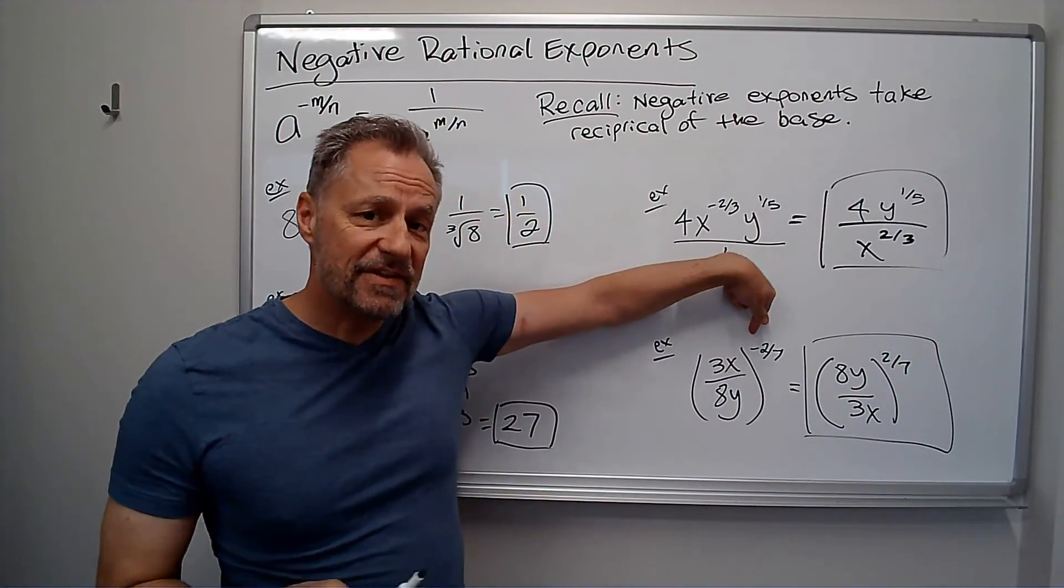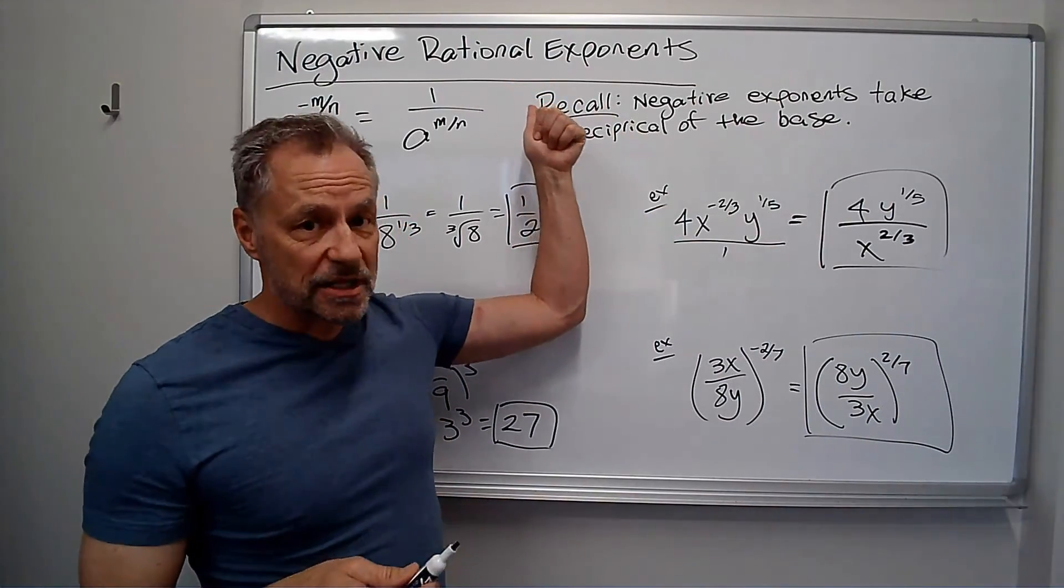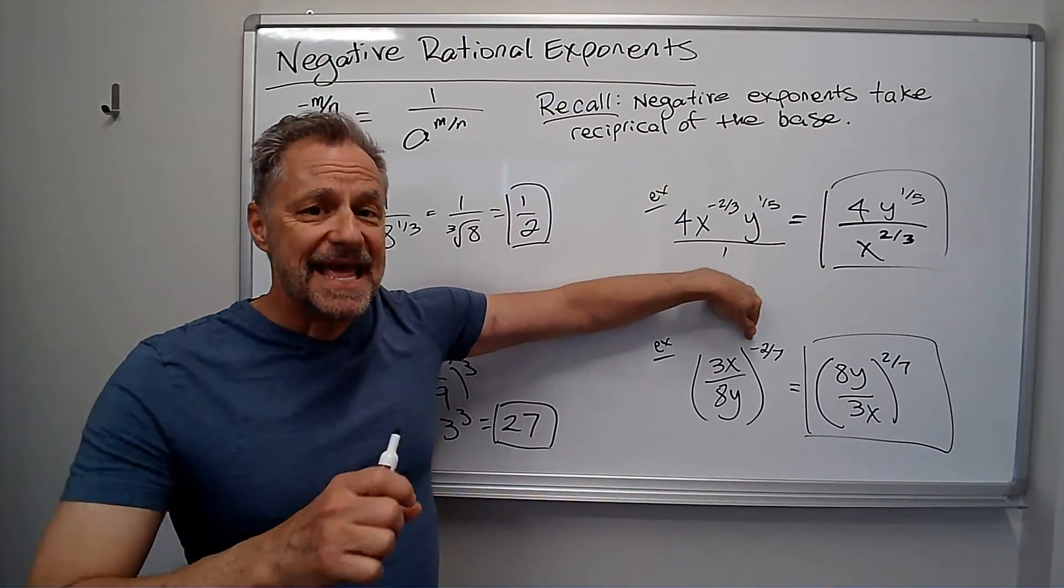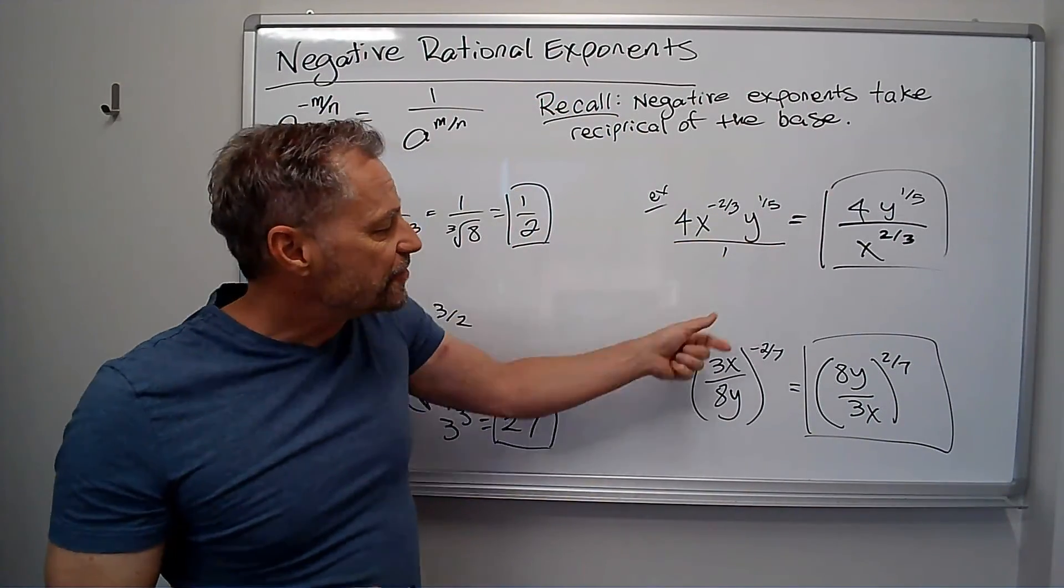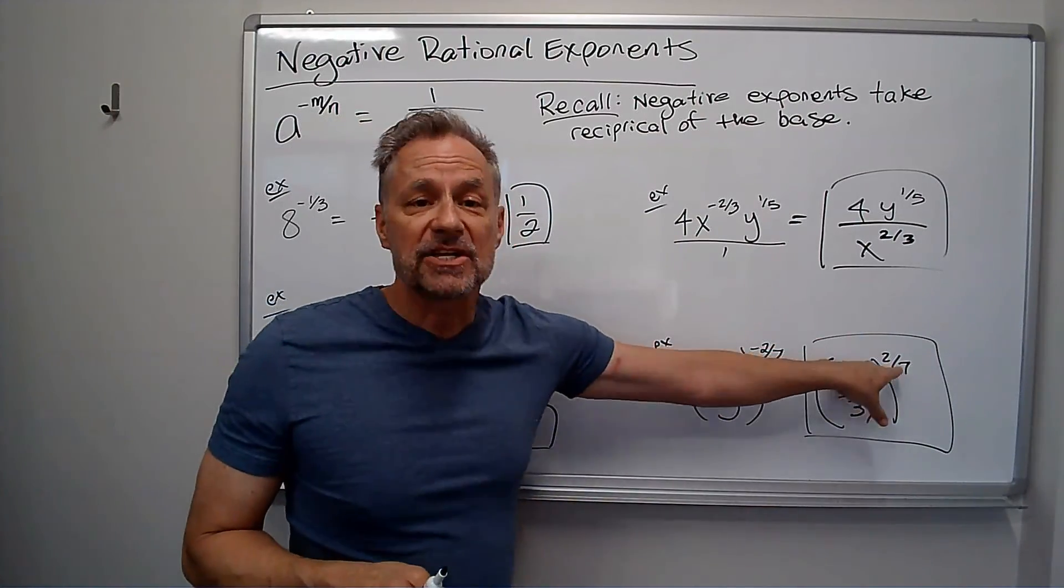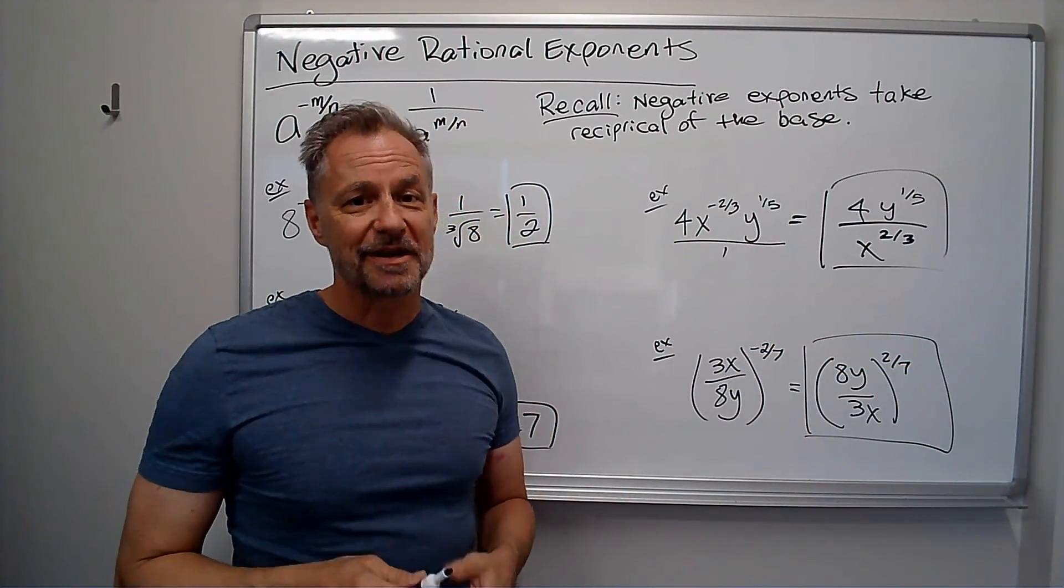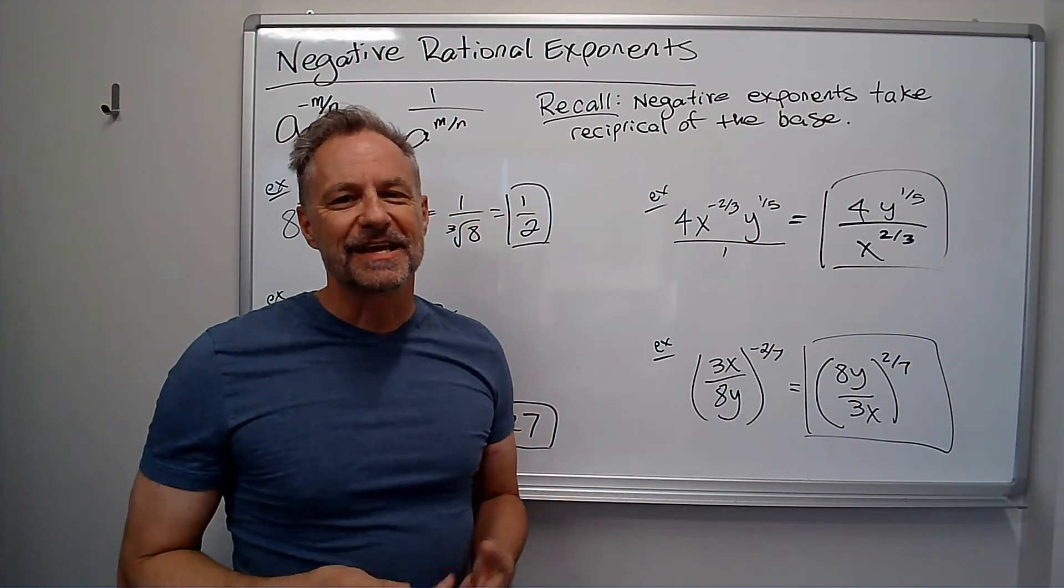All right, so remember, a negative exponent, whether it's a rational exponent or not, doesn't matter. But the negative flips over the fraction. The fraction of the base, not the fraction of the exponent. Okay, practice these, and you'll get them pretty quick.